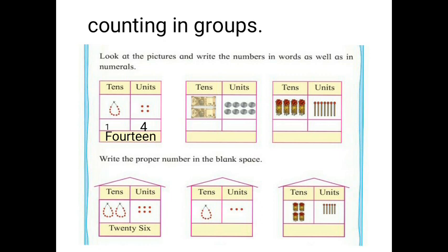Like this, solve the next ones. Next is: write the proper number in the blank space. In the first one, how many groups in tens? There are two groups. And how many single beads in units? There are six beads. So two and six is 26. Like this, solve the next ones.